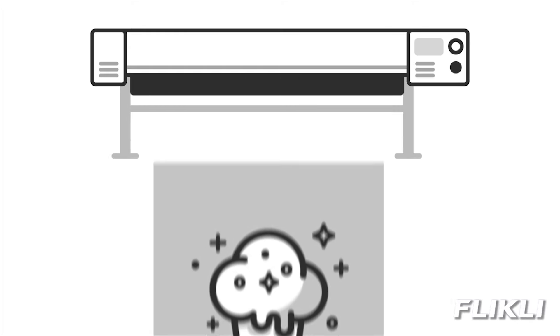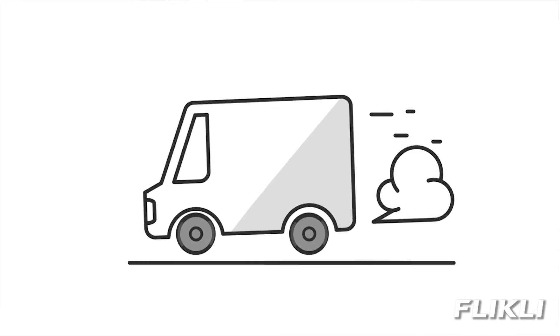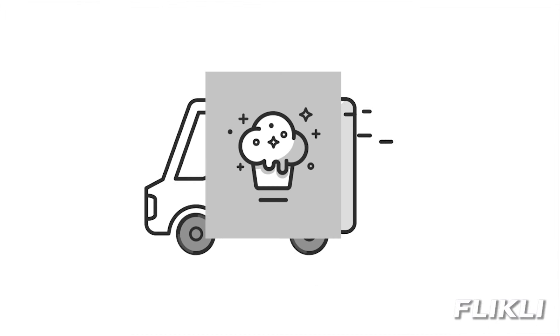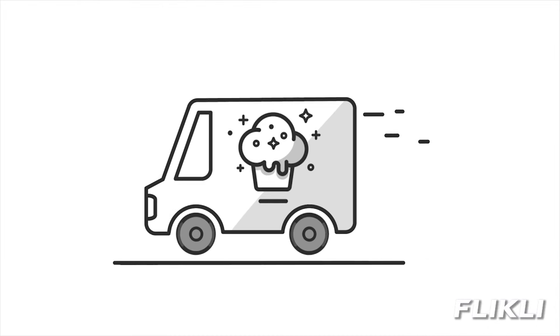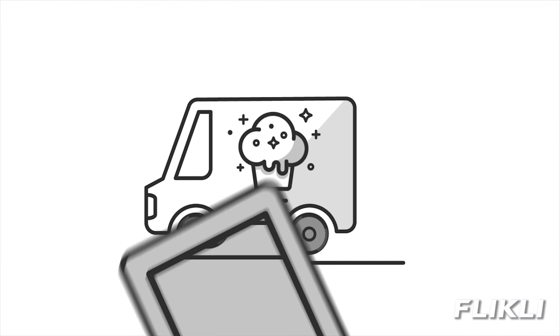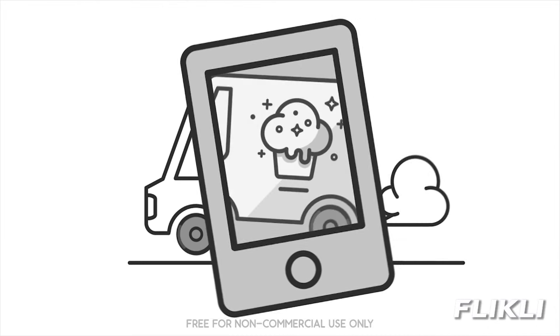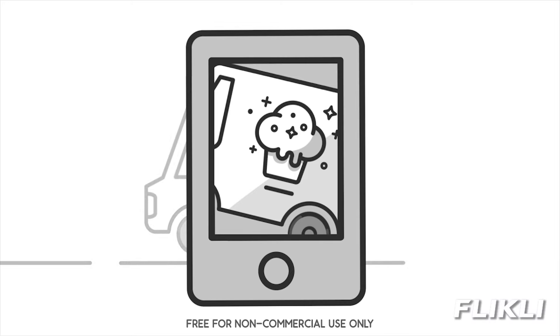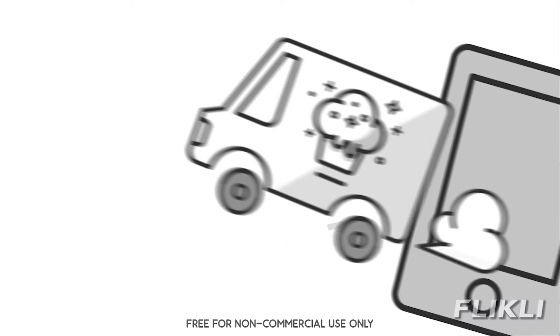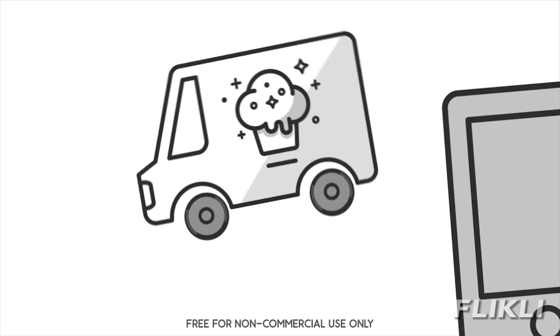Designs such as logos and signage are typically vector images because large scaling is often necessary for printing. Images with a high level of realism and detail, such as photos and digital paintings, tend to be raster images.